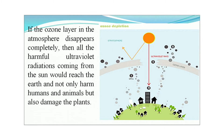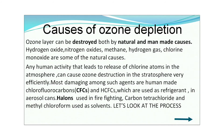If the ozone layer in the atmosphere disappears completely, all harmful ultraviolet radiations from the sun would reach the Earth's surface and not only harm hundreds of animals and plants but also damage other structures. Causes of ozone depletion: the ozone layer can be destroyed by both natural and man-made causes. Natural causes include hydrogen oxide, nitrogen oxide, methane, hydrogen gas, and chlorine monoxide.